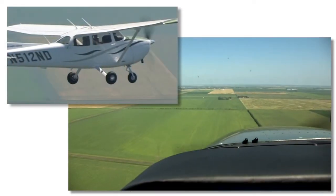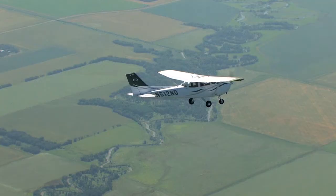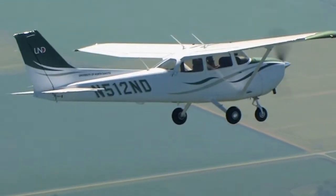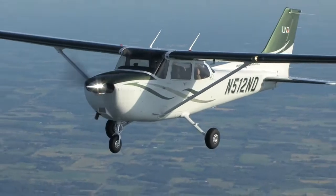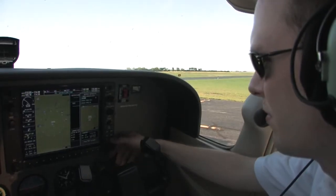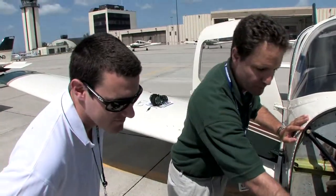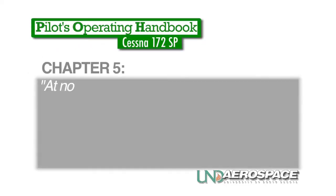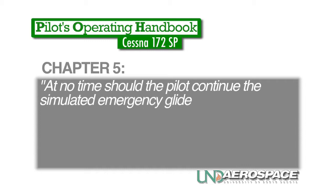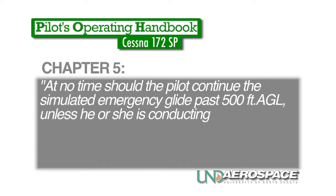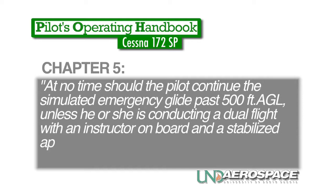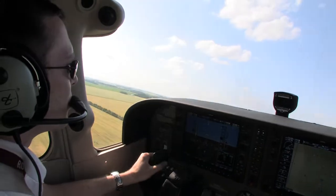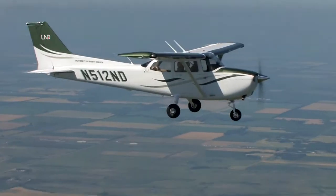These are two contrasting examples designed to illustrate for you, the student, the procedural steps involved with safely and successfully executing an emergency approach and landing in the unlikely event of an engine failure and subsequent failed restart. Understand that this procedure should only be simulated and practiced on dual flights with a UND certified flight instructor under controlled and pre-briefed conditions. According to the UND Aerospace Cessna 172 standardization manual, at no time should the pilot continue the simulated emergency glide past 500 feet AGL unless conducting a dual flight with an instructor on board and a stabilized approach and landing can be made at a UND approved airport. Upon reaching 500 feet AGL, the pilot must initiate a normal go-around and return to cruise flight in his or her practice area.